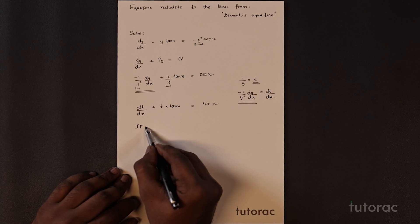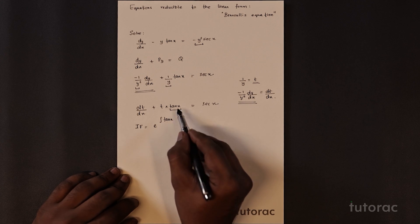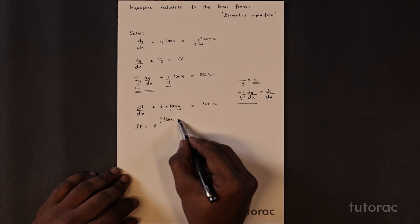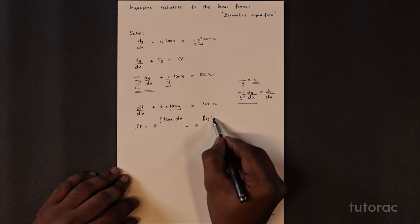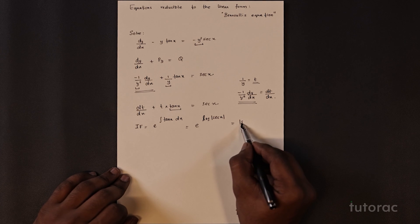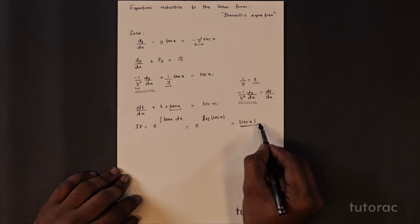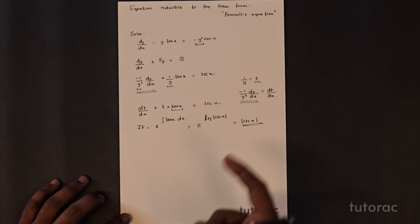To solve a linear differential equation, we first find the integrating factor. Here the integrating factor is e raised to the integral of tan(x) dx. The integral of tan(x) is log|sec(x)|, so the integrating factor is e^(log|sec(x)|), which simplifies to |sec(x)|. So the integrating factor is sec(x).